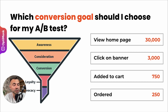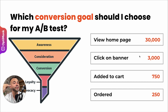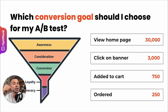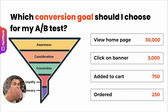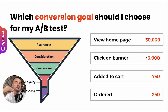But if you choose an upper-funnel metric like banner clicks, with those 3,000 clicks, probably 10,000 homepage visitors will be enough to decide which banner version works best. Of course, this can be misleading because banner clicks don't necessarily equal revenue and orders. The point is that if you want to A/B test faster, you have the option to choose upper-funnel metrics and learn faster.